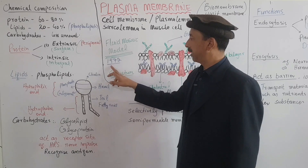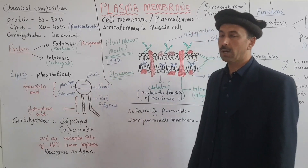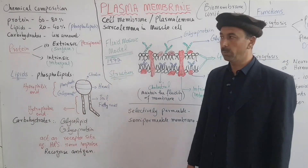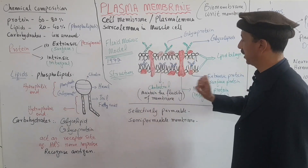The Fluid Mosaic Model was proposed in 1972 by Singer and Nicholson, according to the previous model.